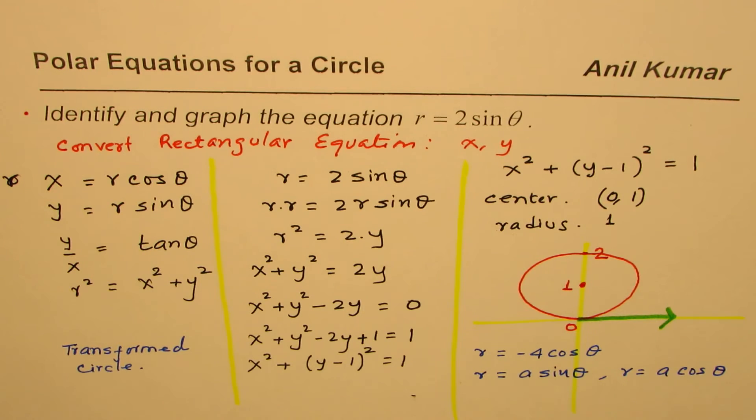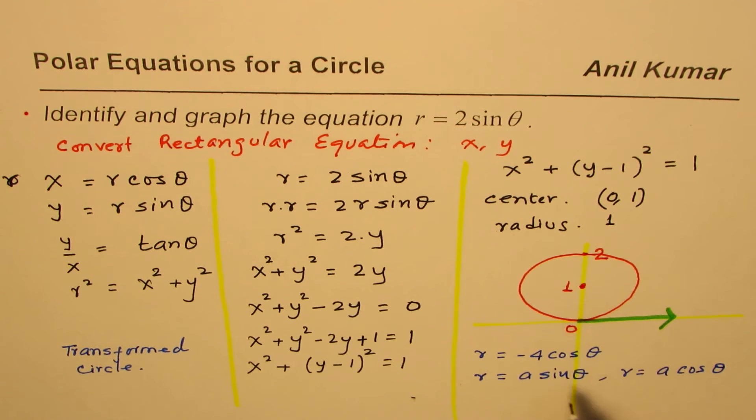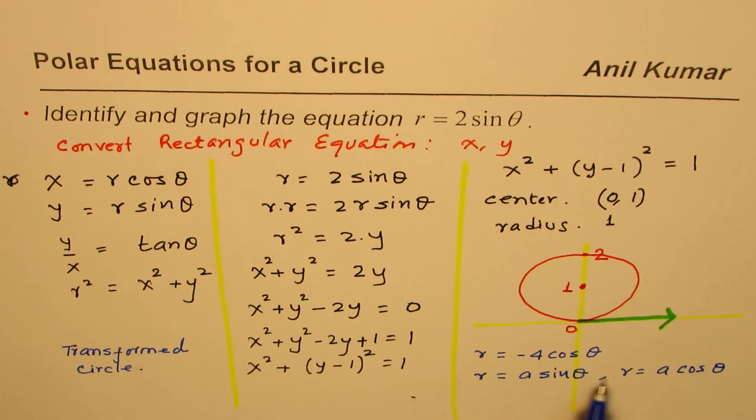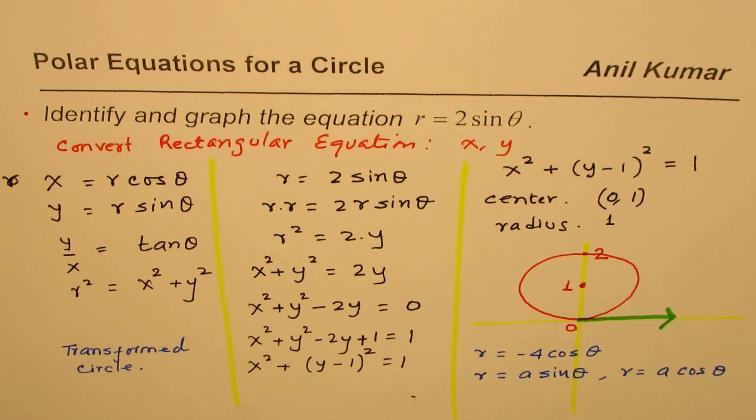So here is an example. You can explore this and then generalize your statement. What will that circle have as a center or what will be the radius of that circle? You could generalize those things after exploring and expanding these expressions, rather converting them to rectangular form and then completing the squares to get the equation of the circle.